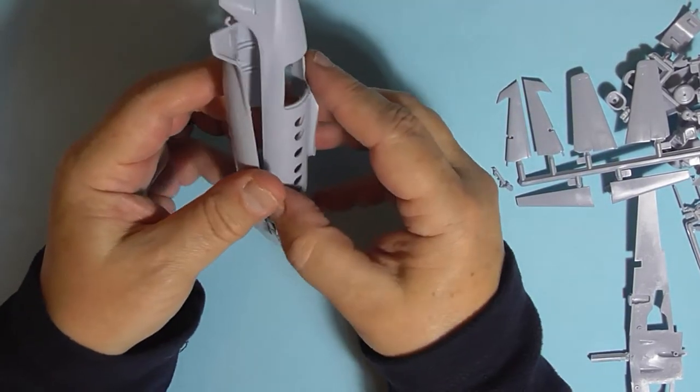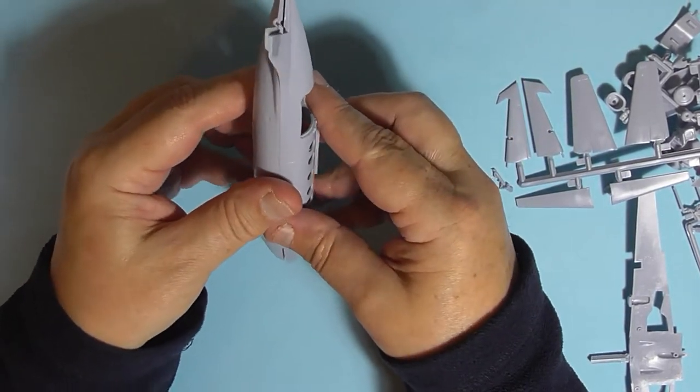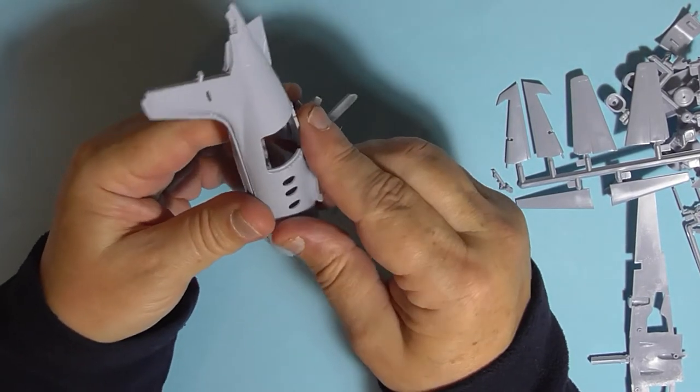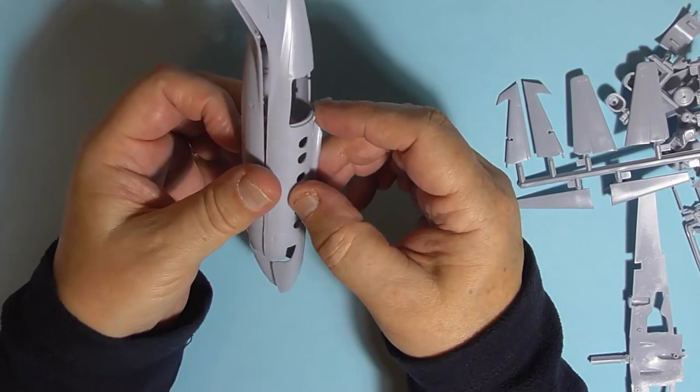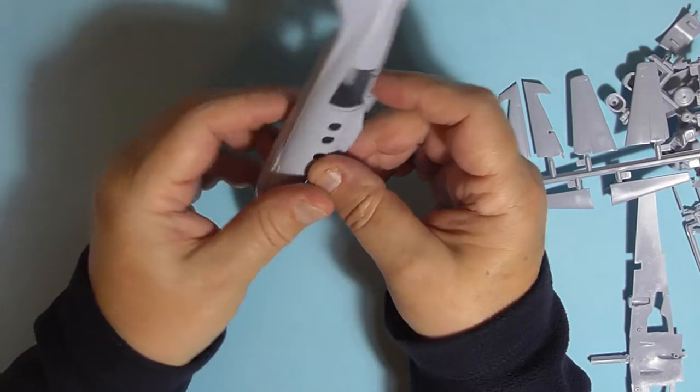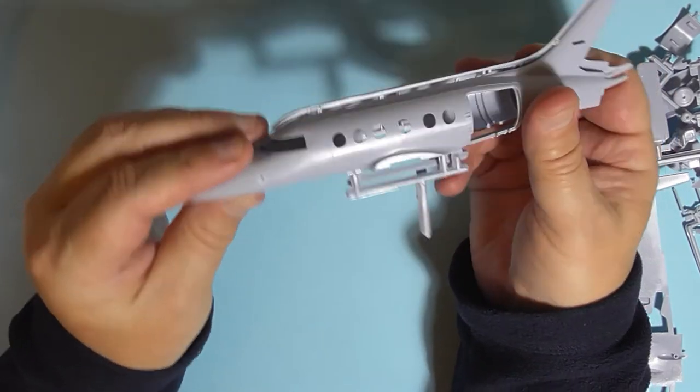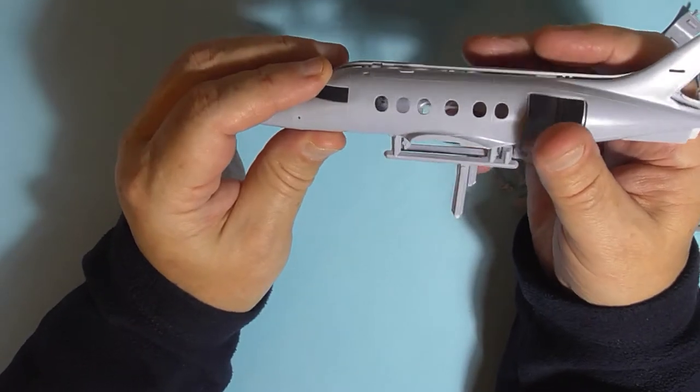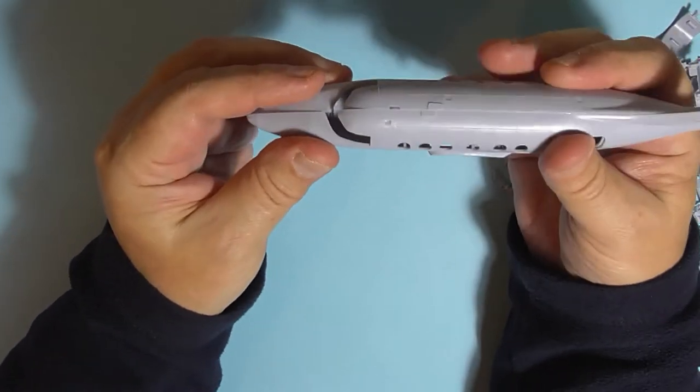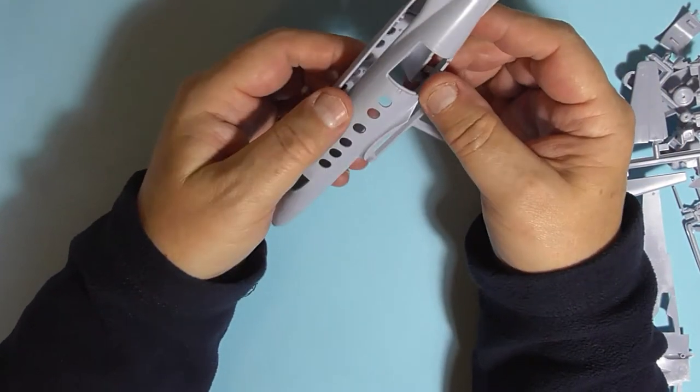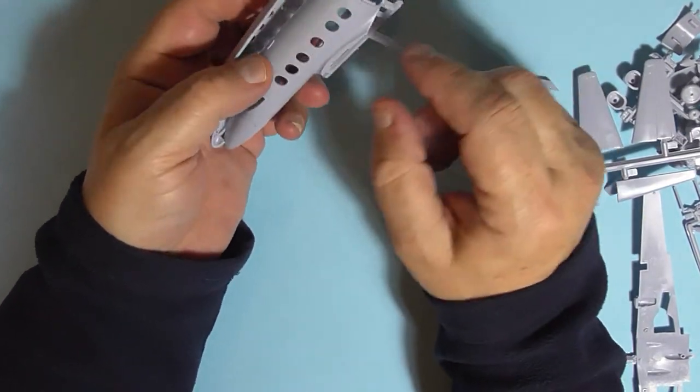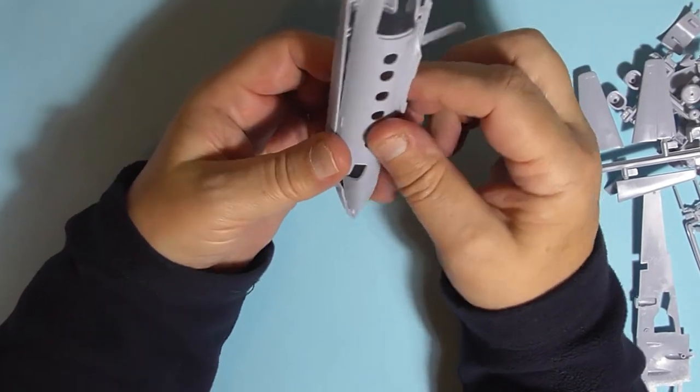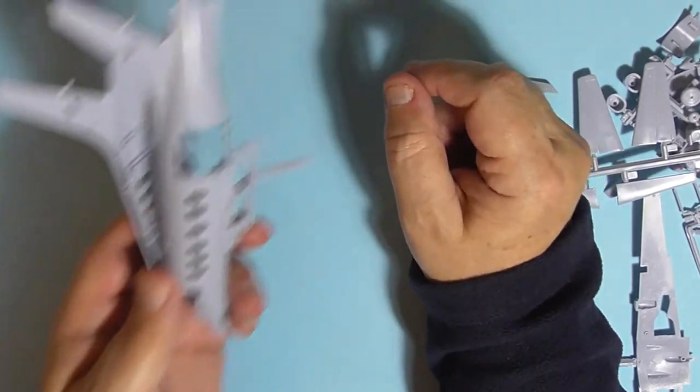Two fuselage halves. I'm not going to be able to get them to go together with those big sprue gates underneath. But anyway, so you've got a rough idea of the size of the aircraft. And yeah, so those windows, I think it'd be easy to make them out of clear fix, I think.